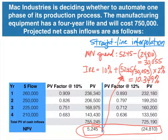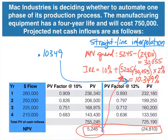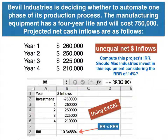We found 10.349% without using Excel. Let's check ourselves by putting it into Excel — we get 10.3488%. So we came very, very close, accurate to three decimal places. This confirms that straight line interpolation gives an excellent approximation of the exact IRR.